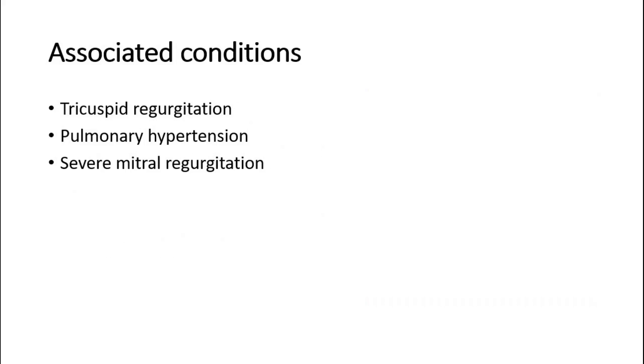Large V-waves are often associated with tricuspid regurgitation, pulmonary hypertension, and severe mitral regurgitation.